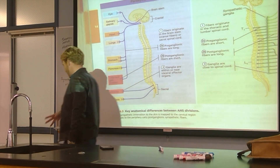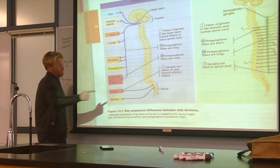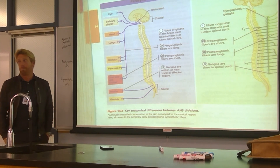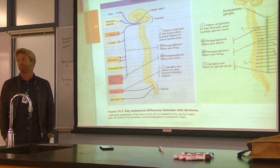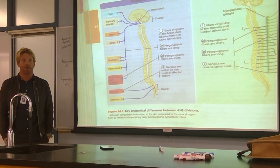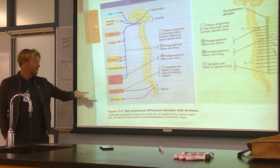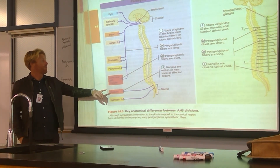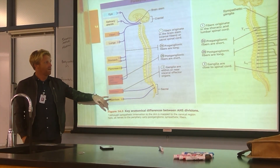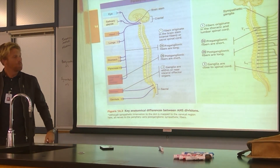The vagus nerve also tells the bladder to contract — giving the urge to urinate when relaxed. And the parasympathetic nervous system is required for sexual arousal.